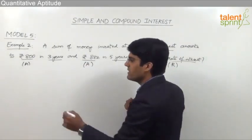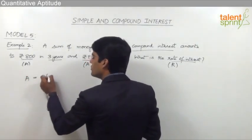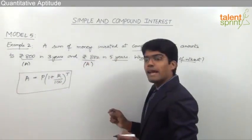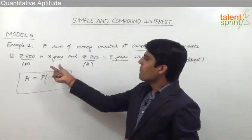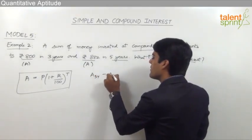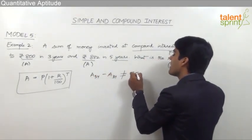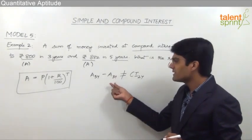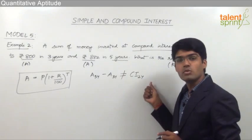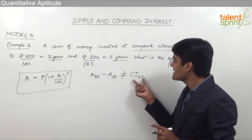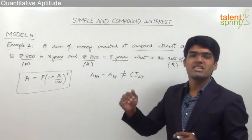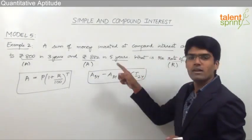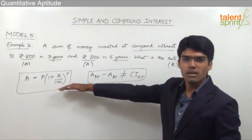As this is a case of compound interest, we know that amount is calculated as P into (1 plus R by 100) whole raised to the power of t. Understand that amount for 5 years minus amount for 3 years cannot be taken as compound interest for 2 years, because compound interest changes every year. So directly we cannot have an equation — never try to take it as compound interest of 2 years. We have to go by the direct formula to solve this question.